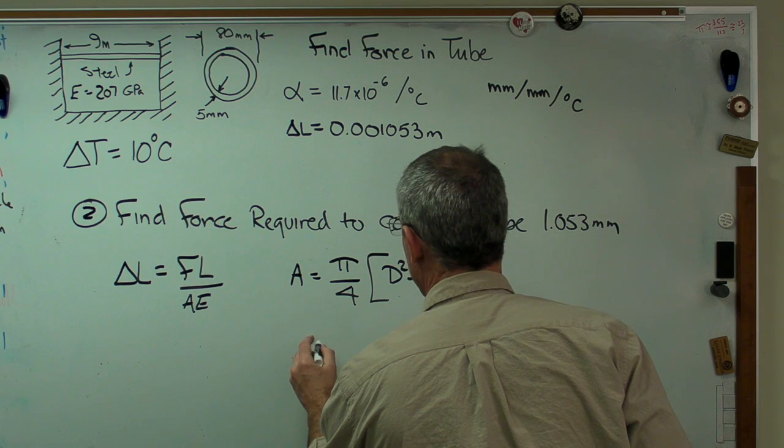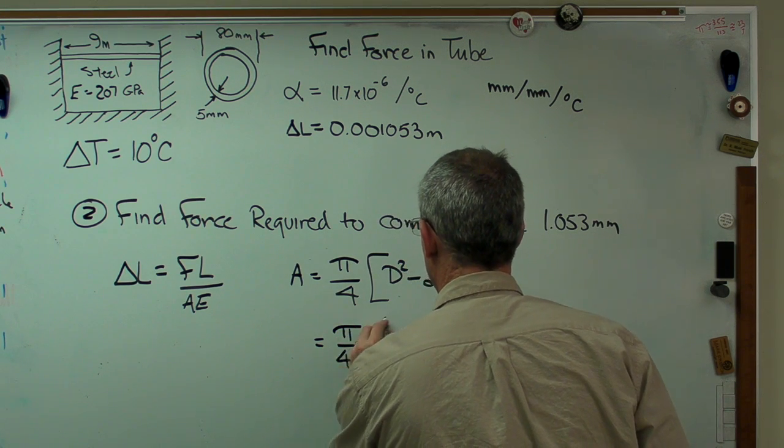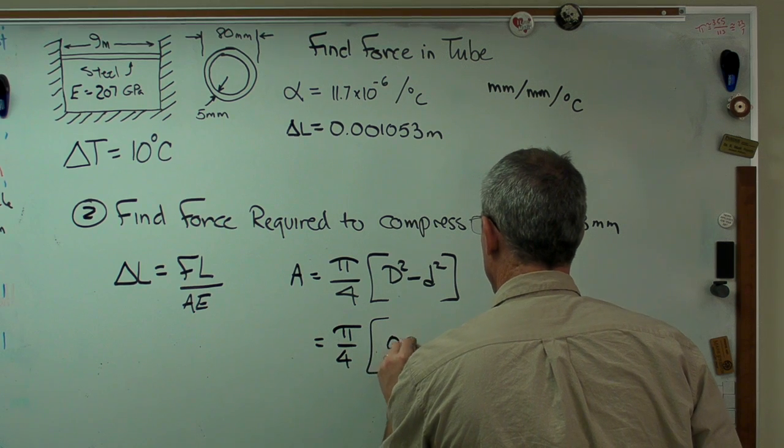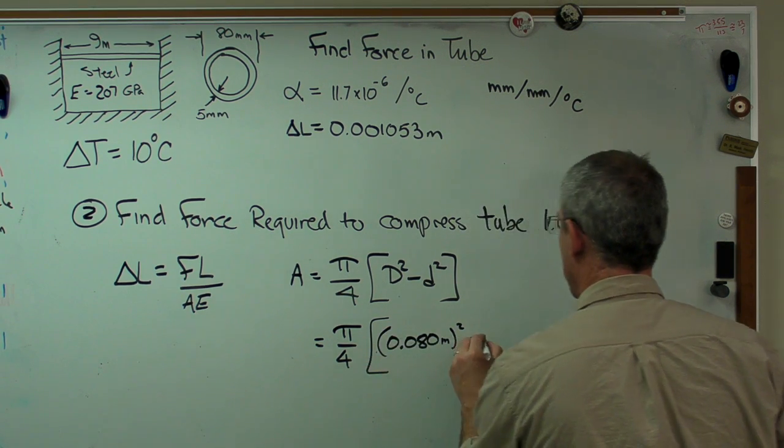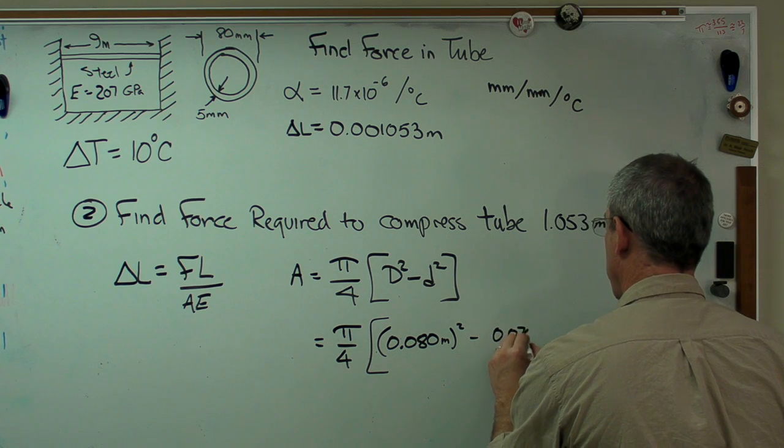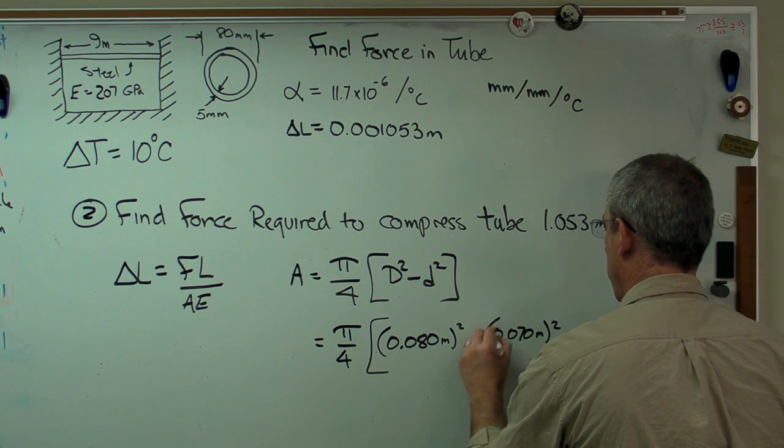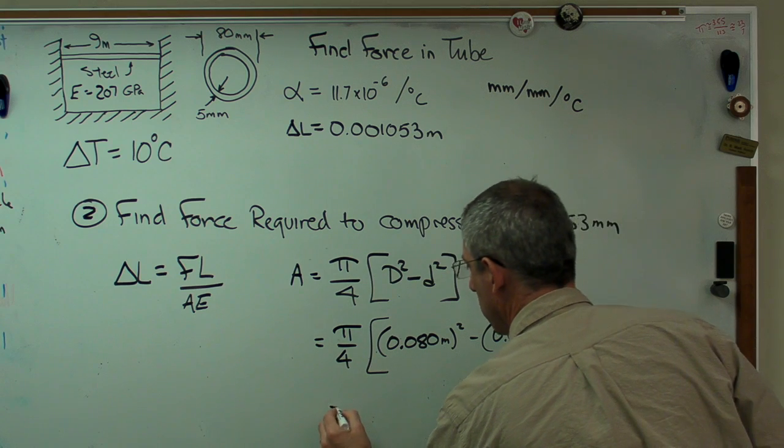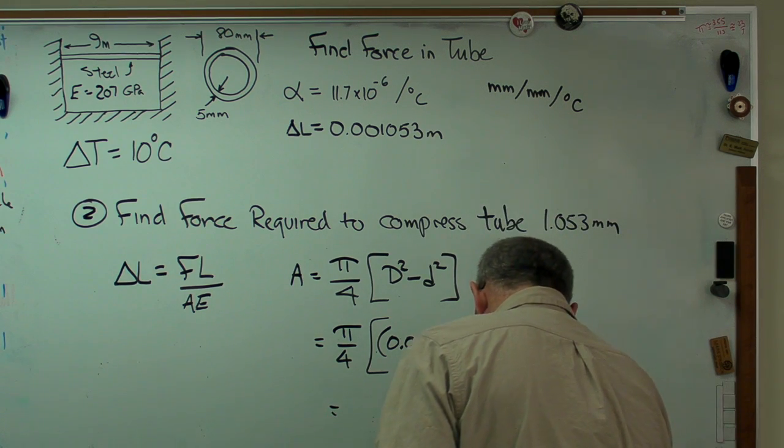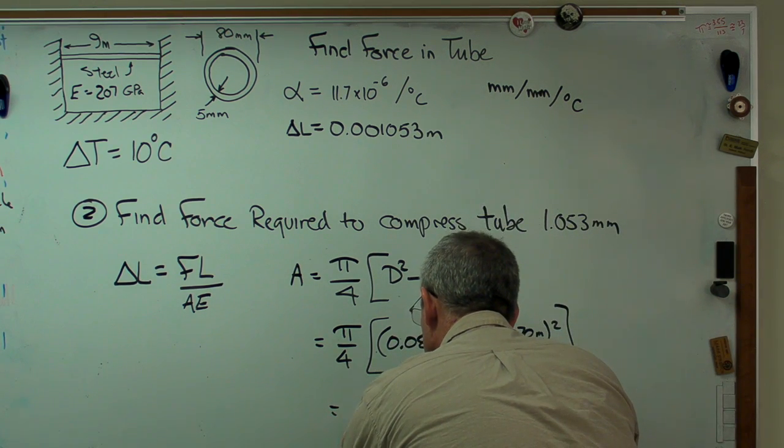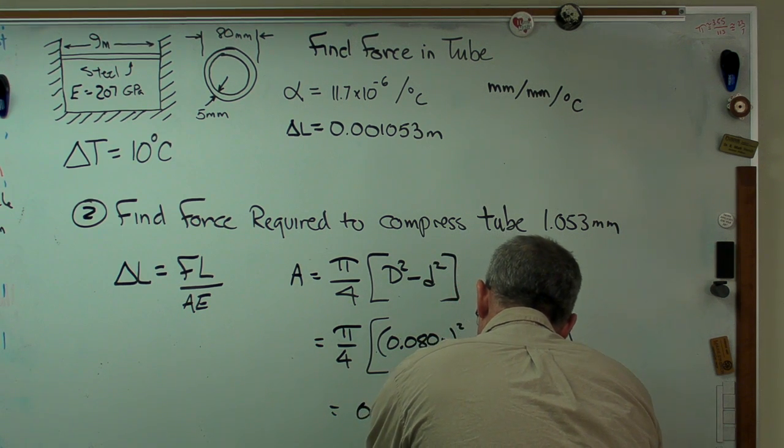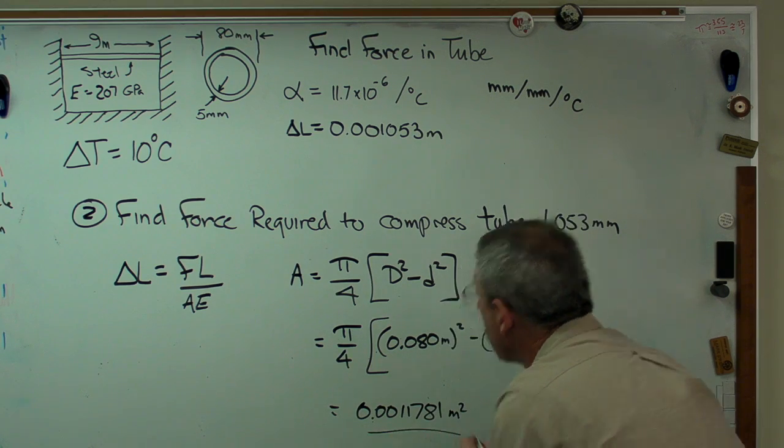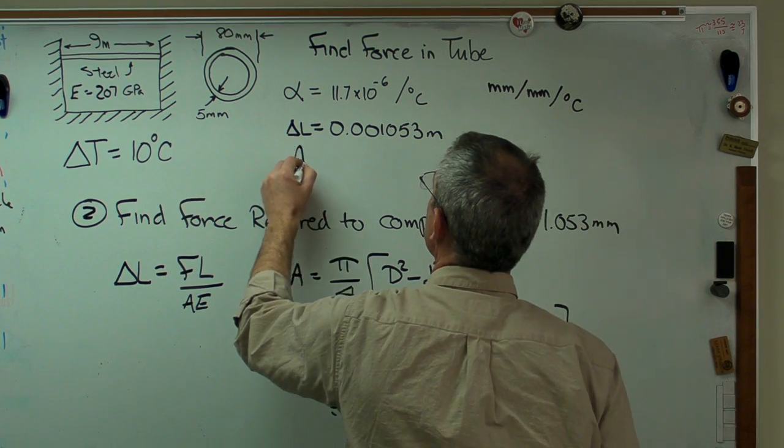So let me put some numbers in here. So that's 0.080 meters squared minus 0.070 meters squared. All right, that works out to, again, a real tiny number, 0.001781 meters squared. Okay, so I'm going to put that up here too.